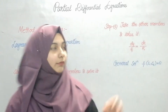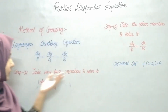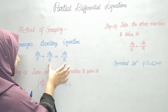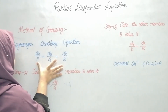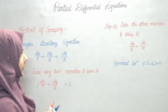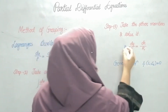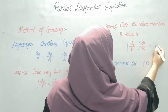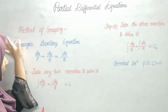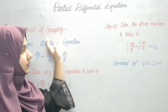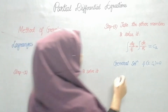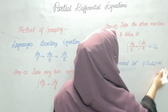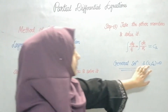The second step is to take the other two members and solve it. Suppose I already took dx/P = dy/Q, then I will take the remaining two: dy and dz. Or you can also take dx and dz — your choice. You integrate those two and get another constant C2. My aim is to find the general solution, which will be F(C1, C2) = 0. Whatever values I get for C1 and C2, I substitute them here.